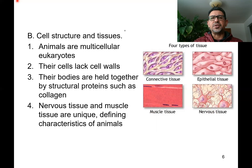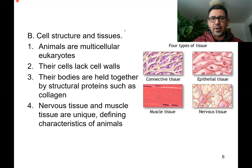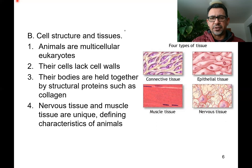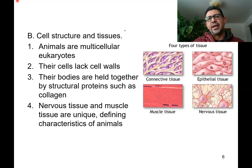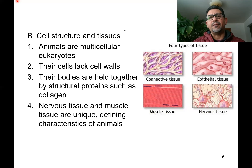In terms of tissues, animals are organisms that have cells organized into a diverse number of tissues. Two kinds of tissues are unique to animals: muscular tissue and nervous tissue. Animals can also have connective tissue, used for attaching one layer of cells to another or one organ to another, providing structural support and protection. Bone, for example, is a type of connective tissue. Cartilage is also a type of connective tissue.